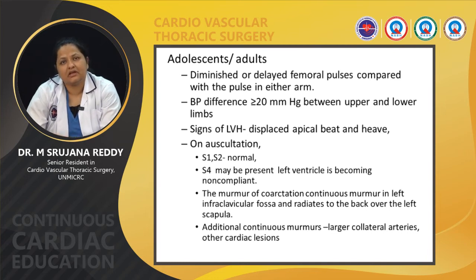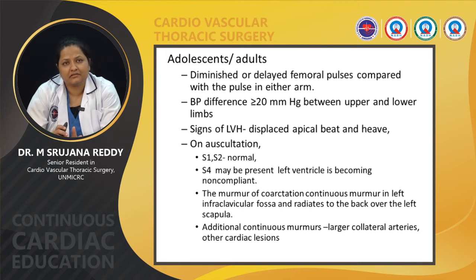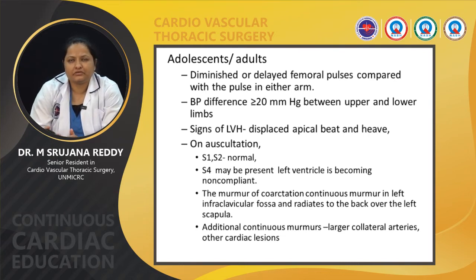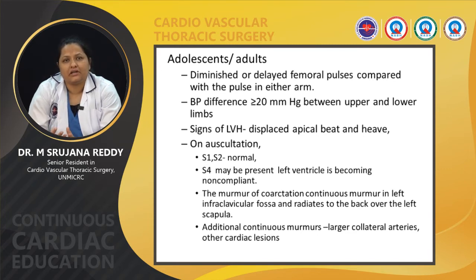In adolescents and adults, there are diminished or delayed femoral pulses compared to pulses in either arm, with a radio-femoral delay noted. Blood pressure in all four limbs should be measured. There can also be a difference in BP between both arms when there is an aberrant subclavian artery arising from the post-coarctation site. The BP difference between limbs is more than or equal to 20 mmHg. Signs of left ventricular hypertrophy such as a displaced apical beat or a heave may be present.